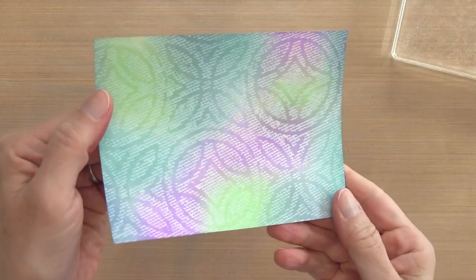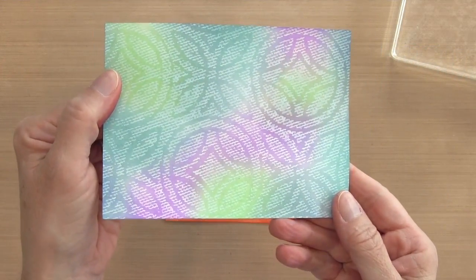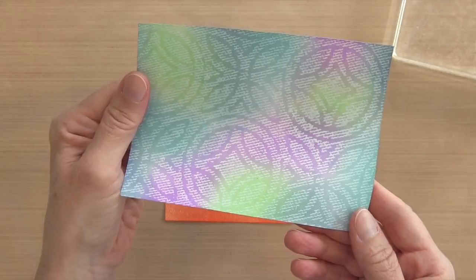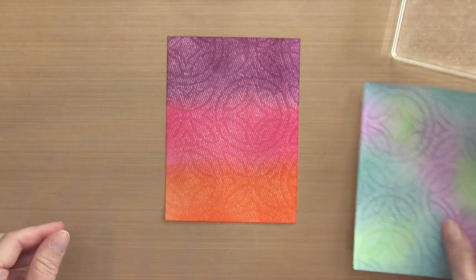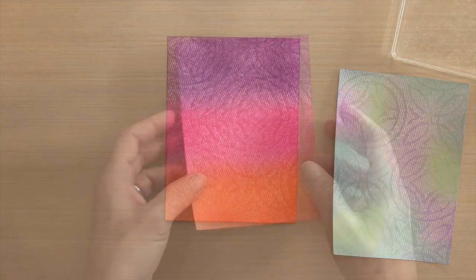Now here's a panel I created with some distress oxide inks, and you can see I think it's a little bit whiter—the pattern is—because it reacts a little bit more with the water.